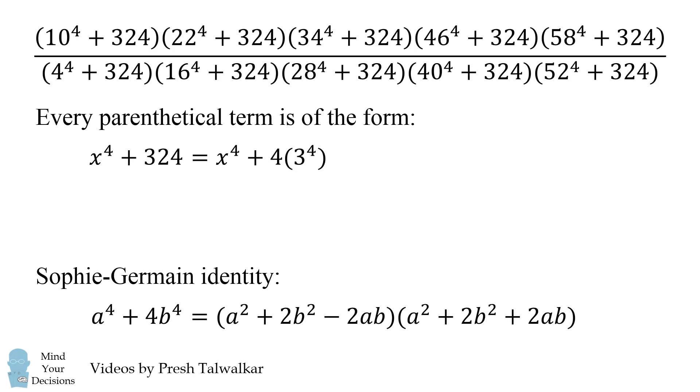So we'll apply this identity to x^4 + 324, and we get the following. We can then simplify this by factoring, and we get the product of the following binomials.